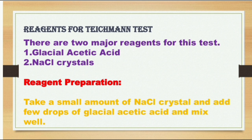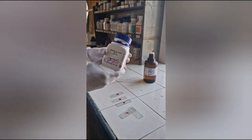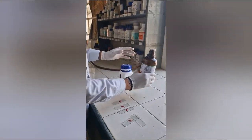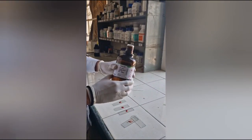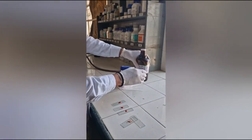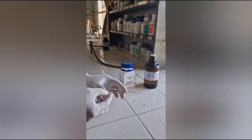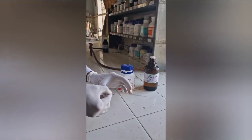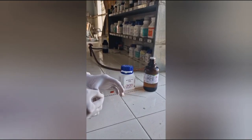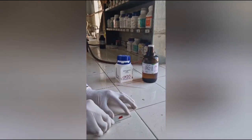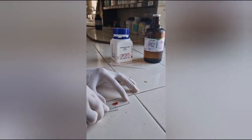Now I will show you the step-by-step procedure and result of this test. For this experiment we need two reagents: first is sodium chloride and second is glacial acetic acid. Here we have taken a blood sample and dried it for at least 10 to 15 minutes. After drying, we scratch it and make it into a powdery form.